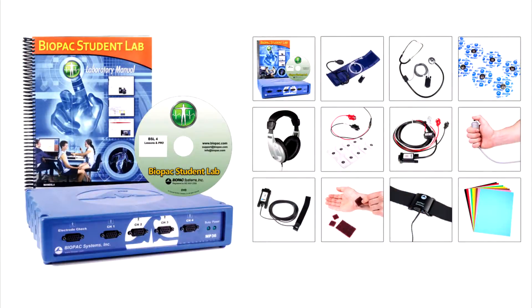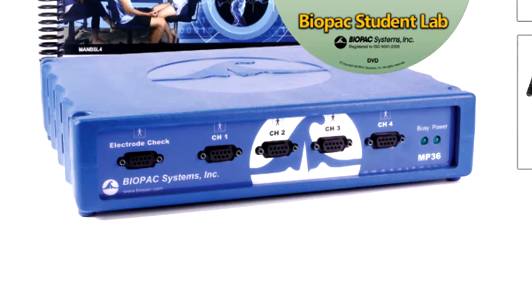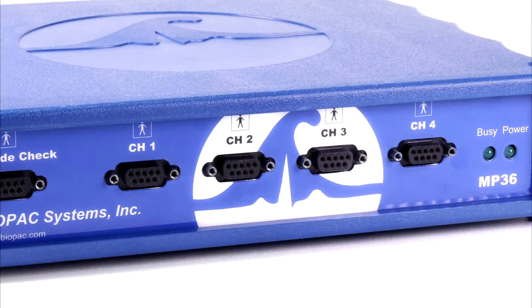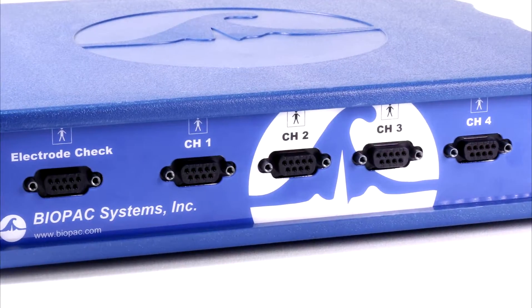This BSL system includes the following. The MP36 data acquisition unit. This is the heart of the Biopac Student Lab system. With four universal analog input channels, data can be recorded from a wide range of signal sources including electrodes,